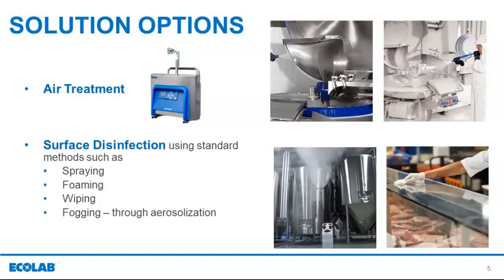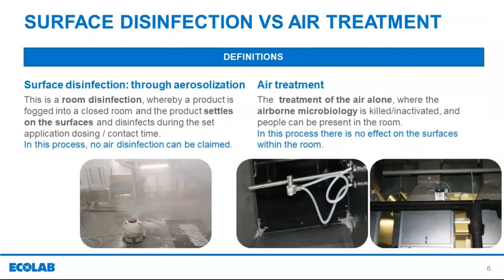Thanks, Steph. When registering an antimicrobial product, it needs to have passed certain test protocols depending upon the application. This is a tiered approach comprising a suspension test — Phase 2 Step 1 — and the surface test — Phase 2 Step 2. In addition, a simulated use test, also known as a Phase 3 test, can be carried out if deemed applicable. A simulated use test involves recreating the scenarios in which one anticipates that a product would be used.